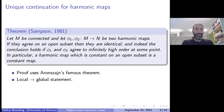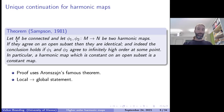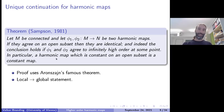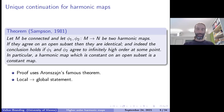Let me show another result for harmonic maps: a unique continuation theorem familiar from complex analysis, where holomorphic functions satisfy something similar. This is due to Sampson from 1981. Assuming M is a connected Riemannian manifold and we have two harmonic maps phi_1 and phi_2, if these two harmonic maps agree on an open subset, then they agree everywhere — they are identical. Equivalently, if they agree to infinite order at some point, they agree everywhere. A special case: if a harmonic map is constant on an open subset, it is constant everywhere.